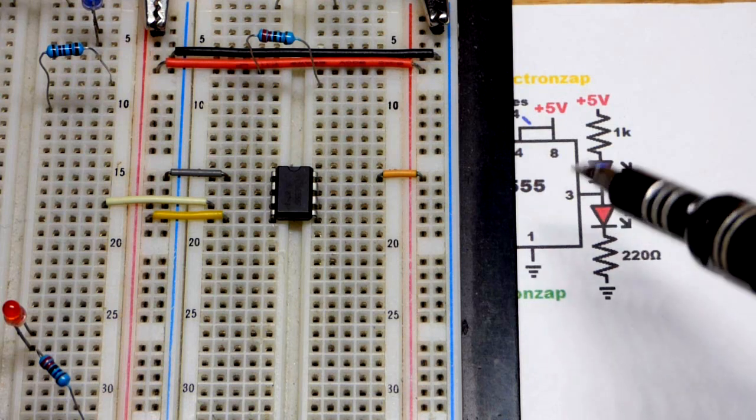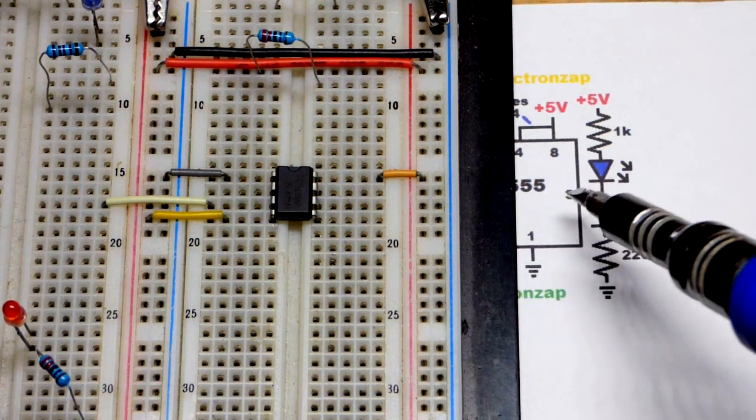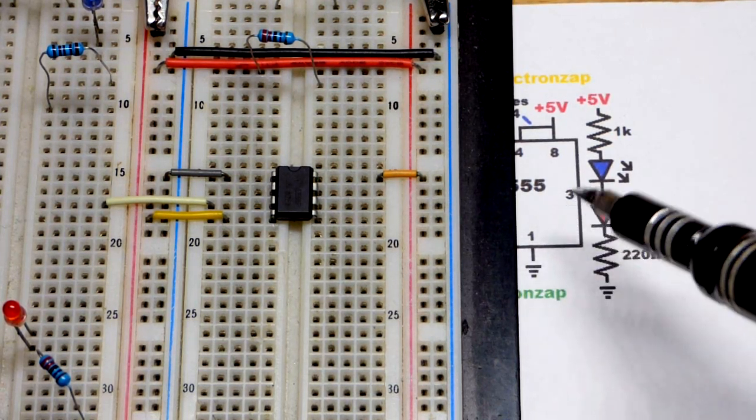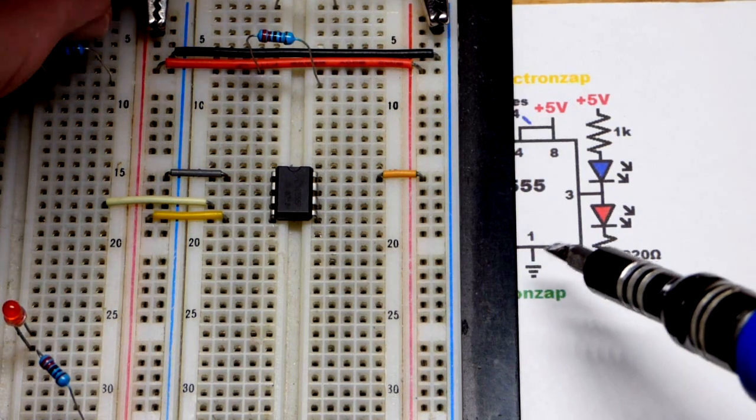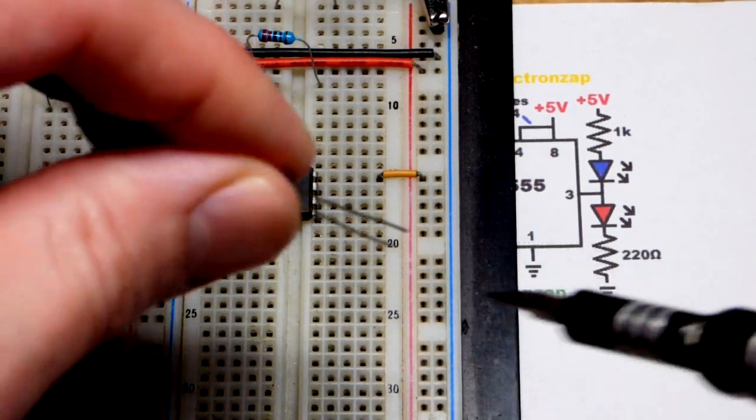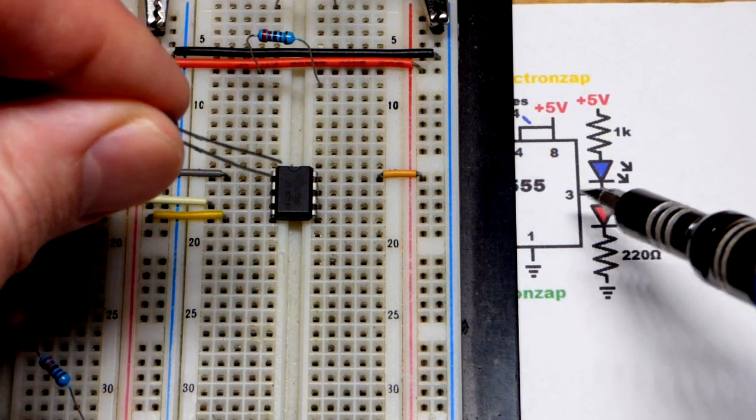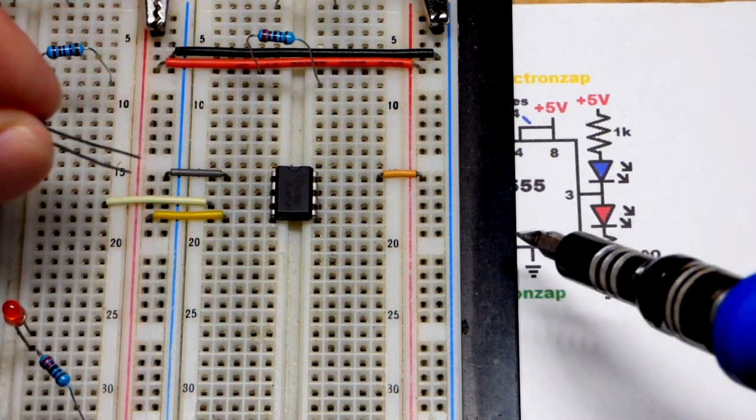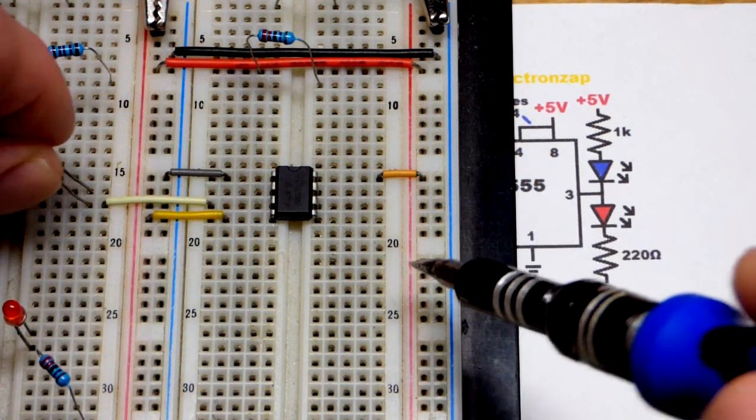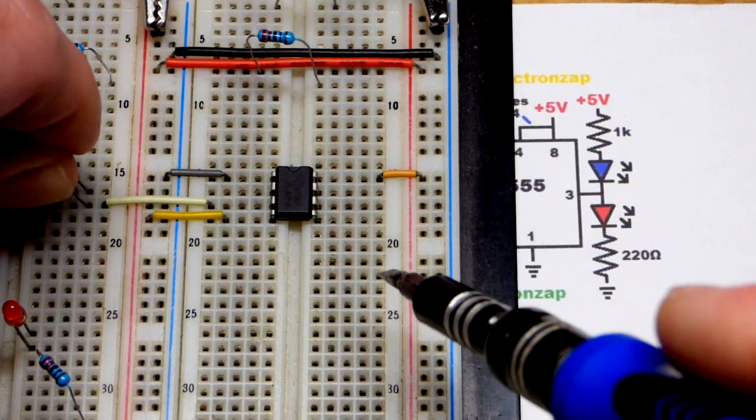Now when it comes to the output, when the output is low we want the blue LED to light up. That's a pretty direct connection to ground with this integrated circuit. The short lead, the cathode, you've got to put it in the right way or it won't light up. We're going to put it to that jumper that goes across to the output.